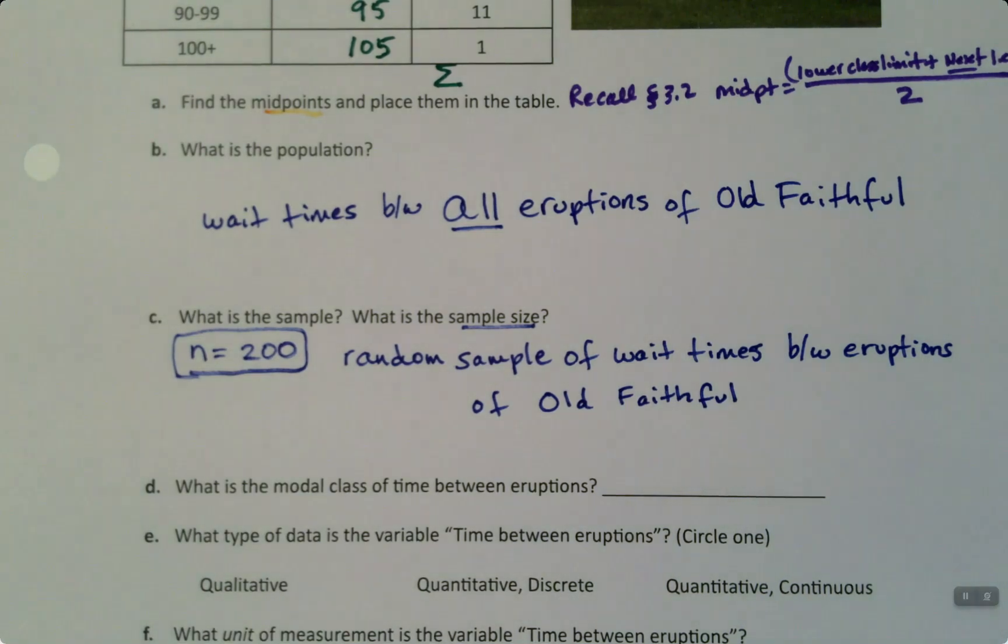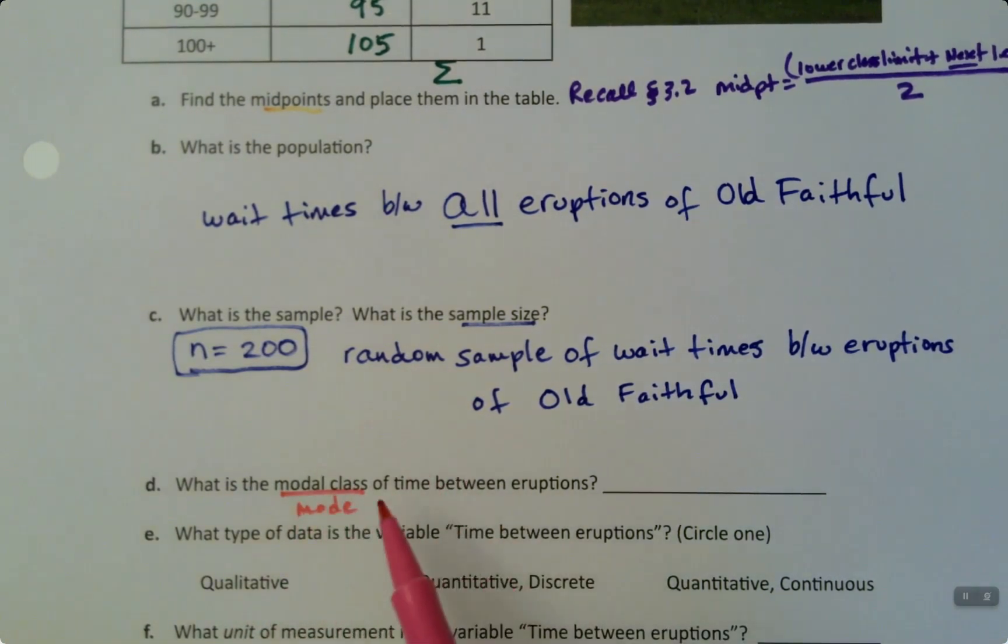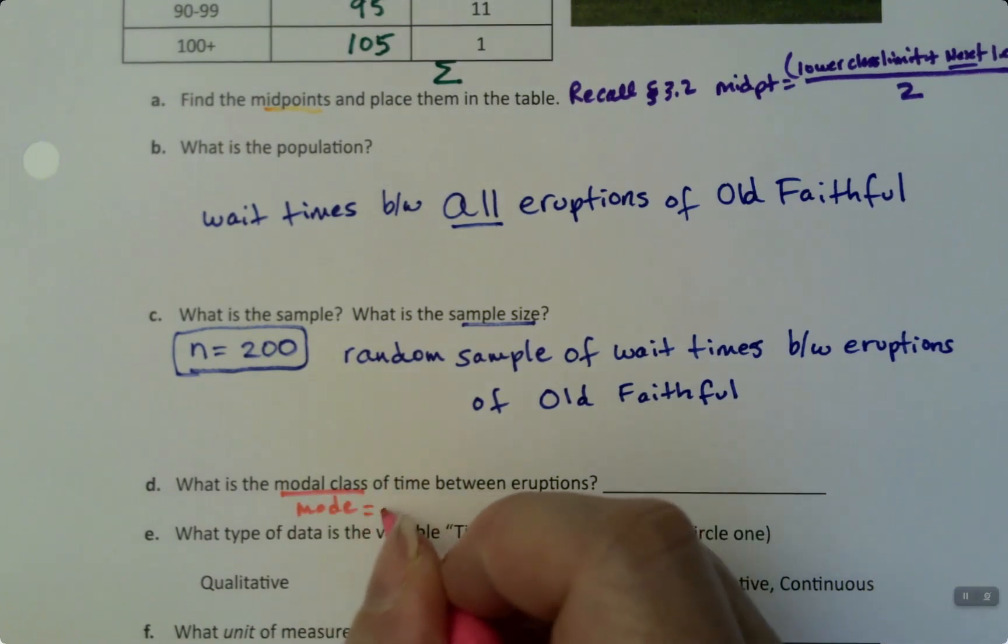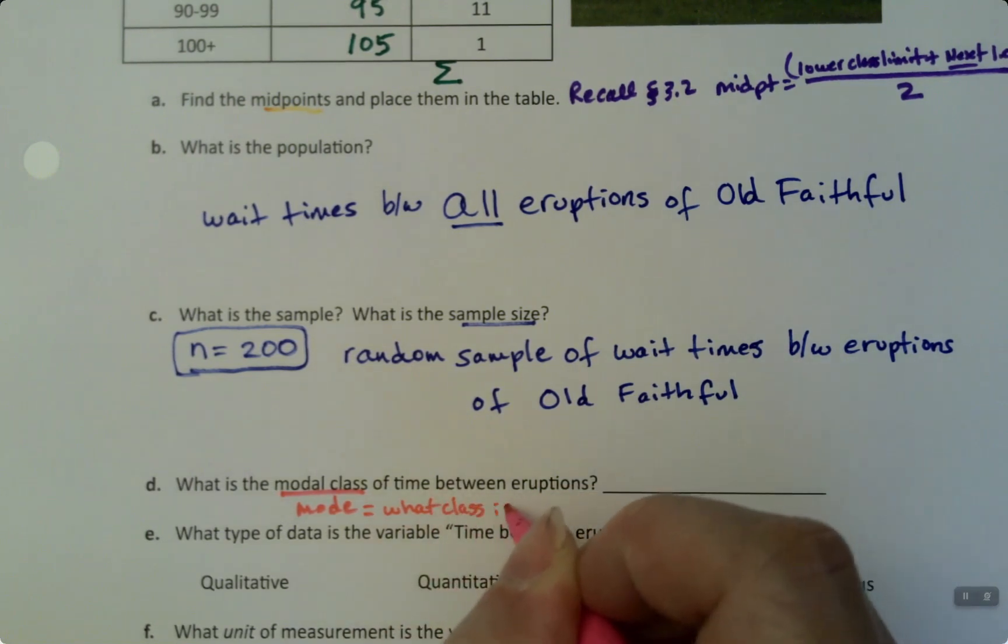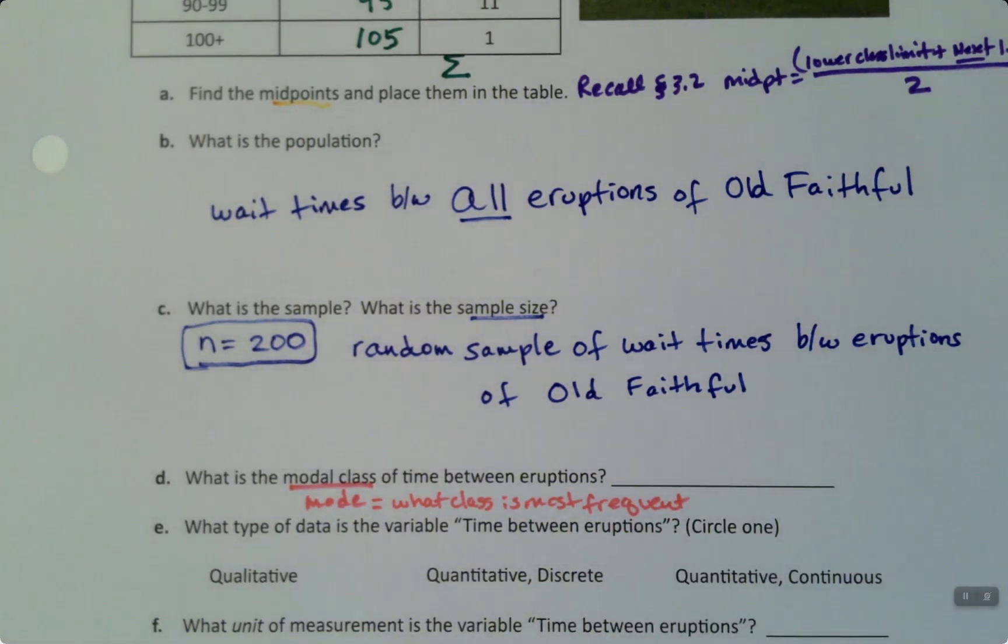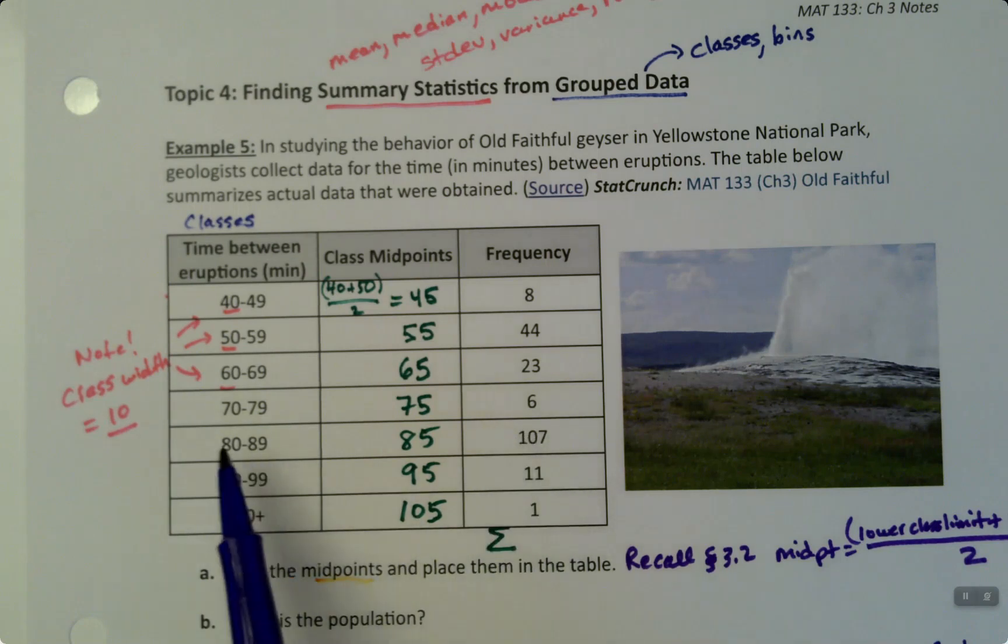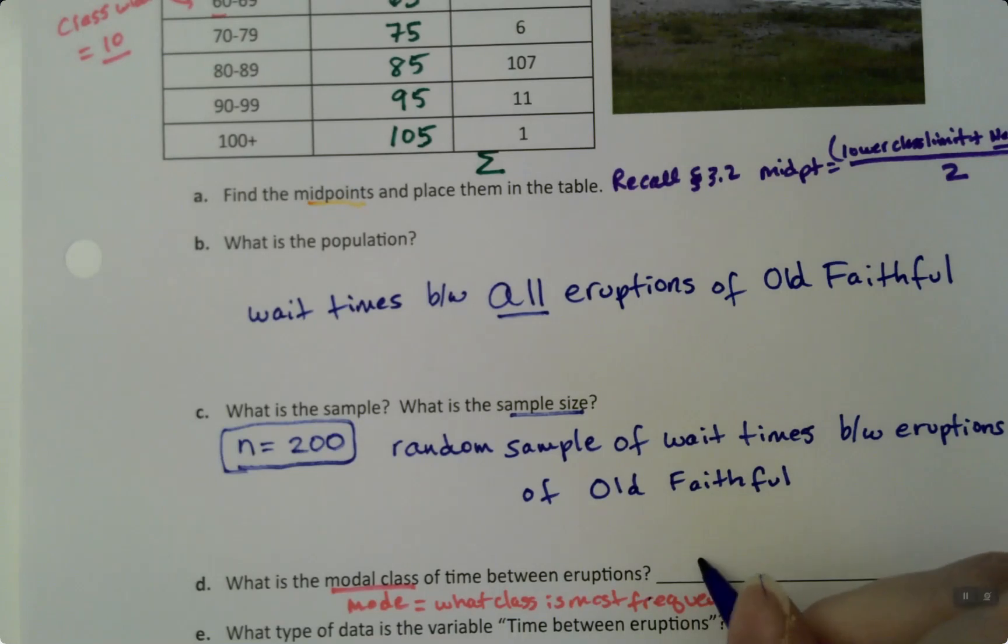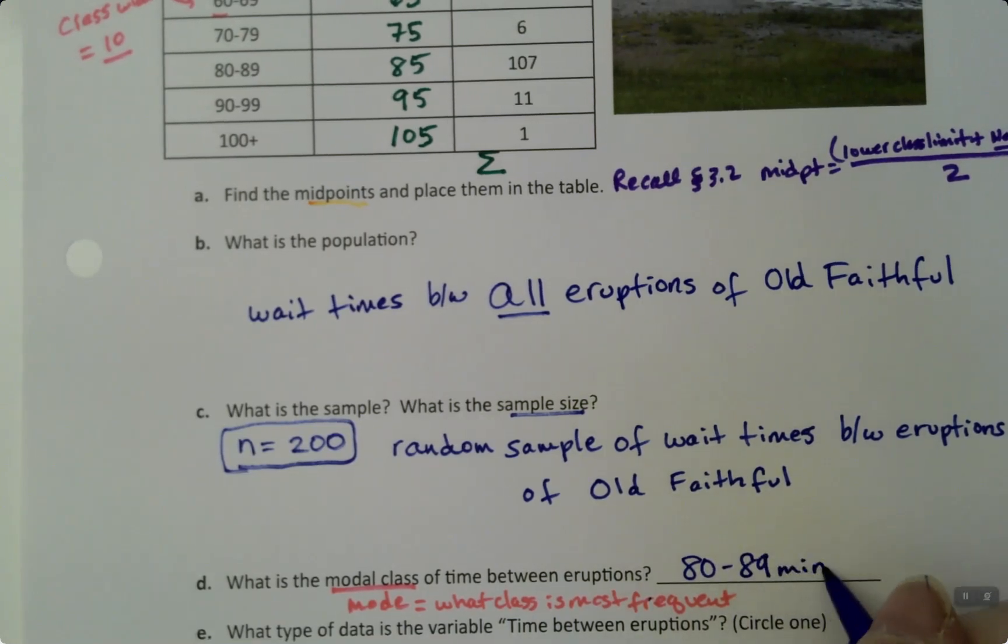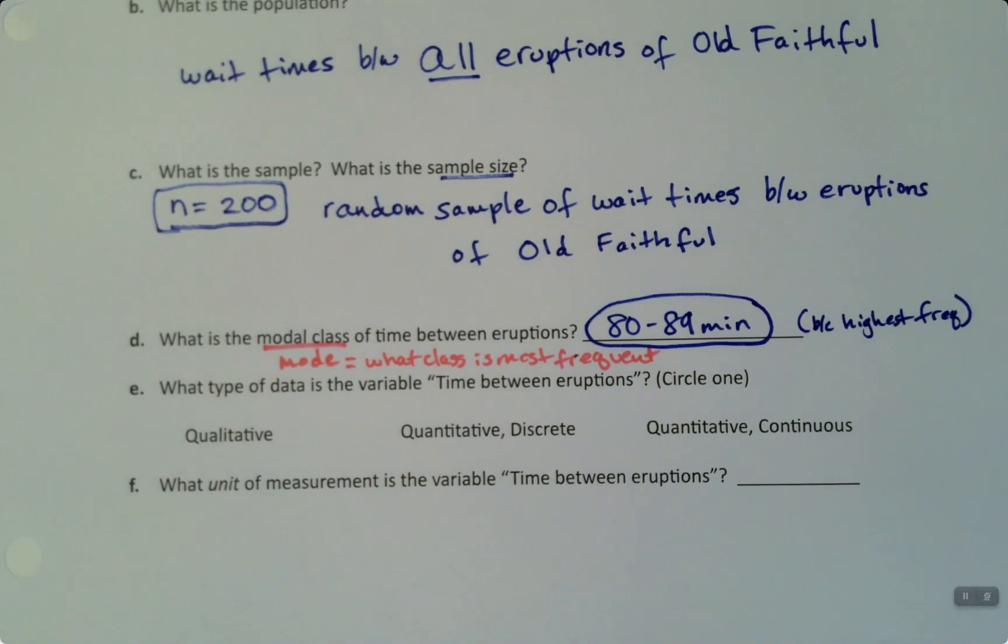I can tell you that when I went to Old Faithful, we were driving up as it was finishing an eruption. And so we did go up to the park ranger and ask this question, how long are we going to have to wait for the next eruption? If that's our sample, it's a random sample of wait times between eruptions, then the population would be the wait times between all eruptions of Old Faithful. Now, the modal class. Well, remember, we've run into this before. This is a mode, it's just class because this is a table. So the mode, which is the most frequent.